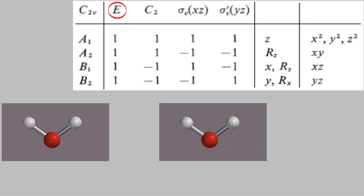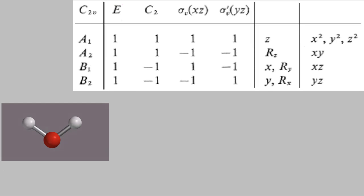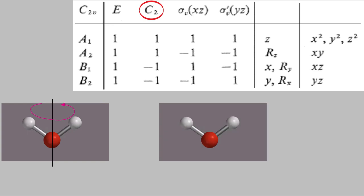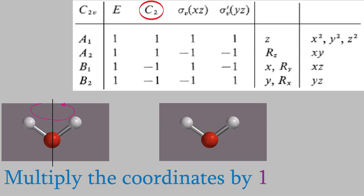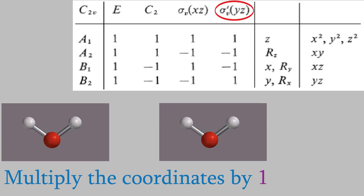Next, let's imagine what happens when we perform the C2 operation on the molecule. When we do that, the molecule ends up looking the same before and after performing this operation, so we just multiply all the coordinates by one in order to make the molecule look the same before and after the C2 operation. The same is true when we reflect the molecule in the XZ plane and also when we reflect it in the YZ plane. All four of these symmetry operations cause no overall change in the appearance of the molecule, so all four of them only require that we multiply the coordinates of the atoms by one.